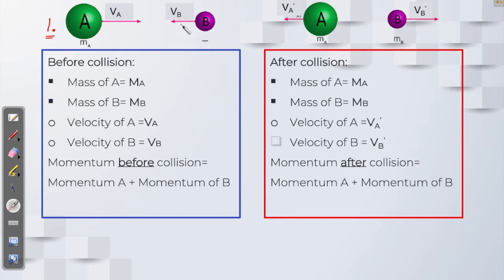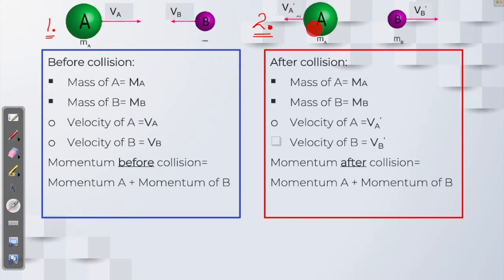In the first picture you see two balls, A and B, moving towards each other — depicted by the two arrows. When two objects move towards each other they will ultimately collide. After their collision, as shown in picture 2, they rebound and move away from each other in opposite directions. Pay attention to the arrows to understand their direction of motion.